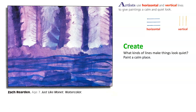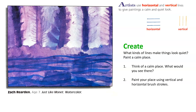Your assignment: paint a calm place. Step one — think of a calm place. What would you see there? Step two — paint your place using vertical and horizontal brush strokes. Step three — add details with the marker. If you remember to use a lot of vertical and horizontal brush strokes, your painting will have the feeling of calm and quiet.